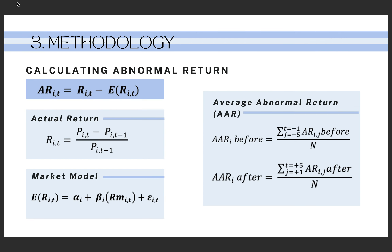After all samples are collected, the next step is calculating abnormal return. The formula is: abnormal return equals actual return minus expected return. For expected return, the formula is alpha plus beta multiplied by market return. One last step in abnormal return is to calculate the overall abnormal return of sample stocks using the formula of average abnormal return.